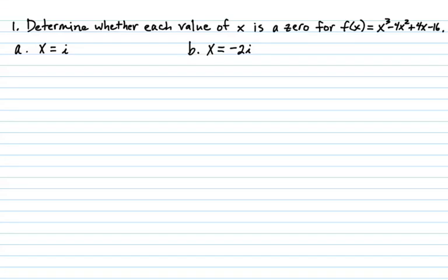All right, so here's a couple of examples for lesson 4.3 where the numbers weren't quite as nice as the ones we did previously. So here it says determine whether each value of x is a zero for f of x equals x cubed minus 4x squared plus 4x minus 16. So first of all, we're going to see if i is a zero. So let's go ahead and set this up using synthetic division.